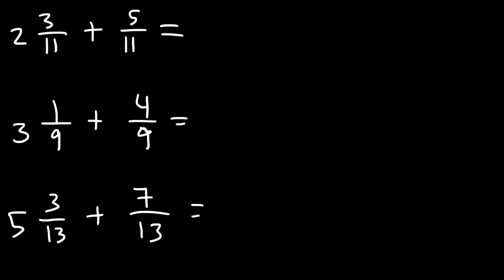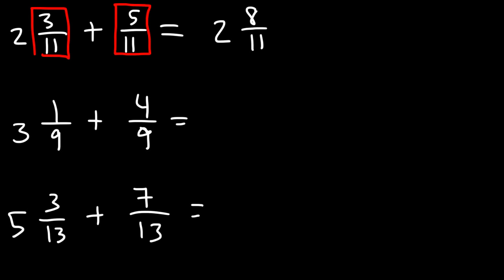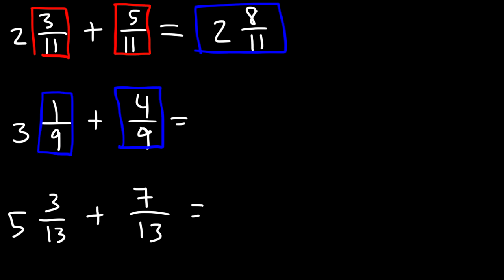In the first example, all we need to do is add these two fractions since they have like denominators. 3 over 11 plus 5 over 11 is 8 over 11. So the final answer is 2 and 8 over 11. For the second example, all we need to do is add 1 over 9 plus 4 over 9. 1 plus 4 is 5, so this gives us 3 and 5 ninths.